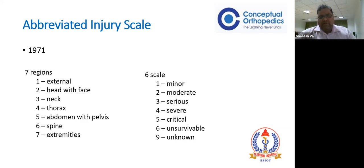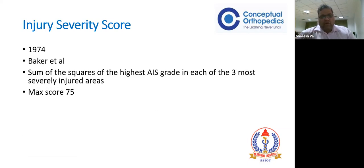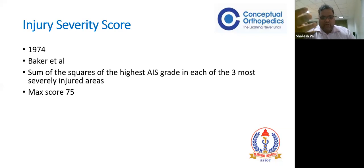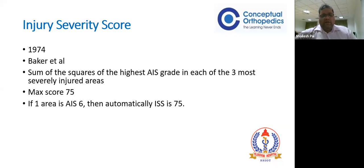The injury severity score was introduced as a modification by Baker et al. in 1974. They took three areas with the worst injuries and squared the sum of the highest scores of those three areas. If all body regions are injured, we consider which three are worst - for example thorax, abdomen, and extremity - score each and square the maximum. The maximum score is 75, because each score can be at most 5 (score of 6 means unsurvivable, so those patients automatically receive 75 regardless of other injuries).